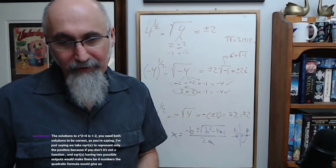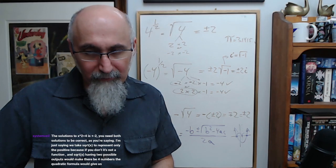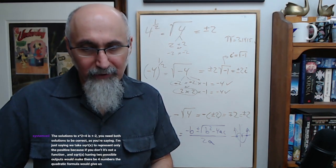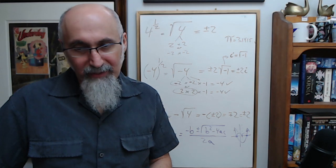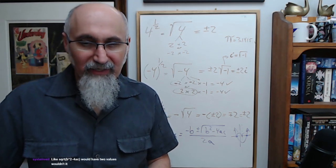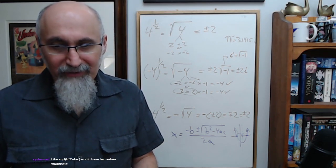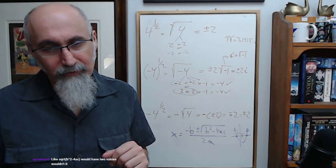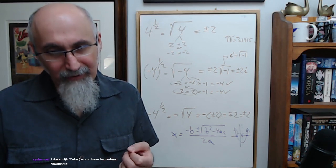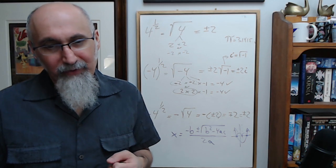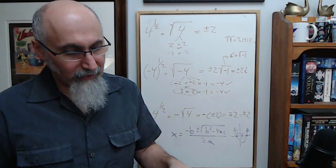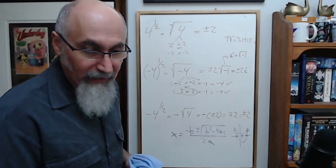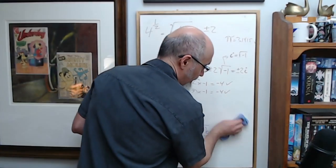The solution to x squared equals 4 is plus or minus 2 — you need both solutions to be correct. We take the square root of x to represent only the positive because if you don't, it's not a function. If you're talking about functions only, having two positive outputs would make there be four numbers; the quadratic formula would give us four numbers.